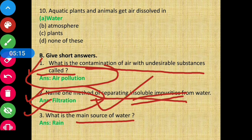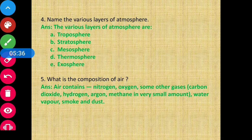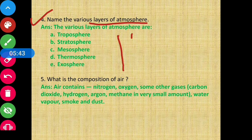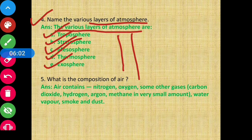Question number 3 — what is the main source of water? There are many sources of water like rivers, ponds, and wells. But the main source of water is rain. Question number 4 — name the various layers of atmosphere. There are 5 layers: troposphere, stratosphere, mesosphere, thermosphere, and exosphere. These are the 5 layers of atmosphere.